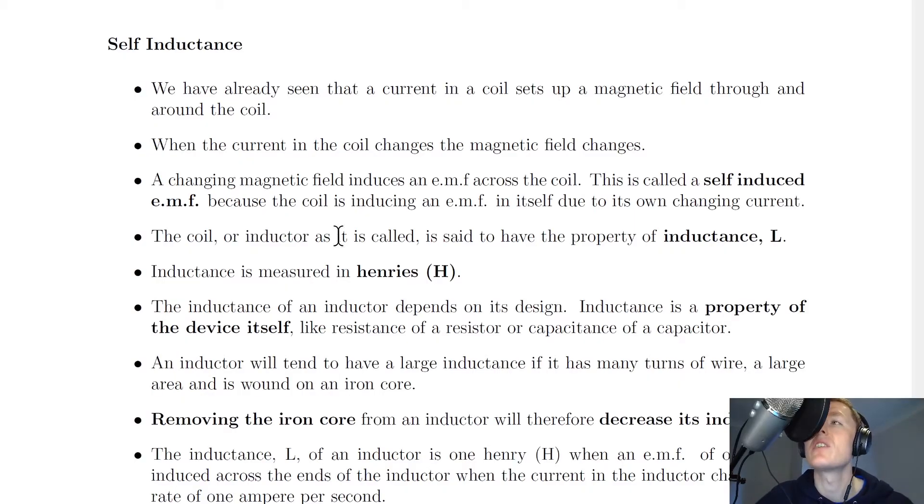We're going to extend our ideas of inductance and inductors that we've already seen so far. We have already seen that a current in a coil sets up a magnetic field through and around the coil. When the current in the coil changes, the magnetic field changes. A changing magnetic field induces an EMF across the coil. This is called a self-induced EMF because the coil is inducing an EMF in itself due to its own changing current.